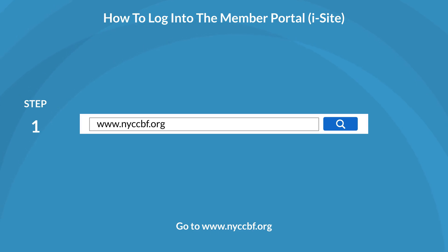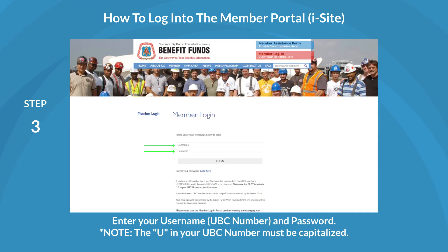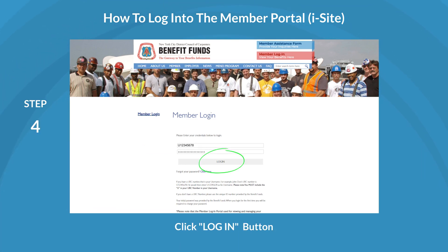First, go to www.nyccbf.org. Click on the Member Login button located in the top right corner of the screen. Enter your username, UBC number, and password. Note: the U in your UBC number must be capitalized. Click the Login button.